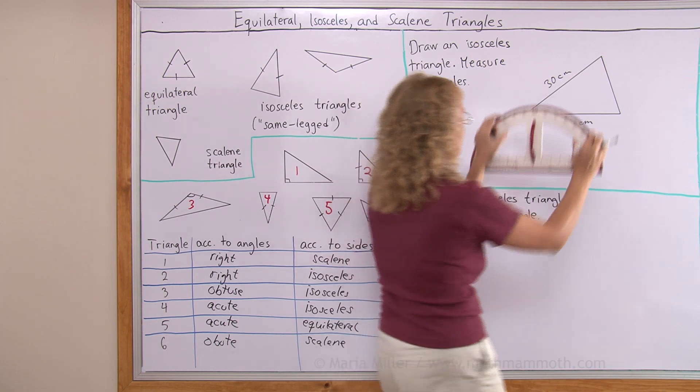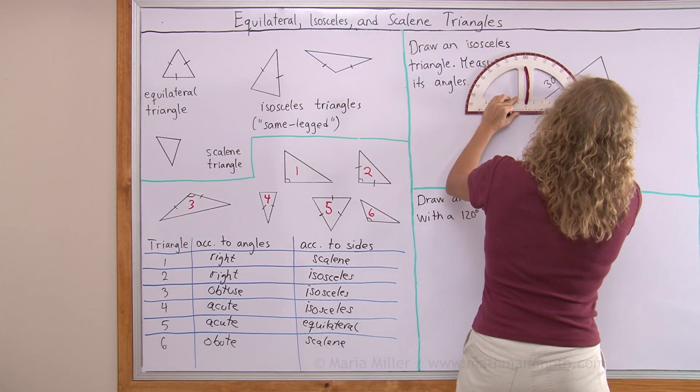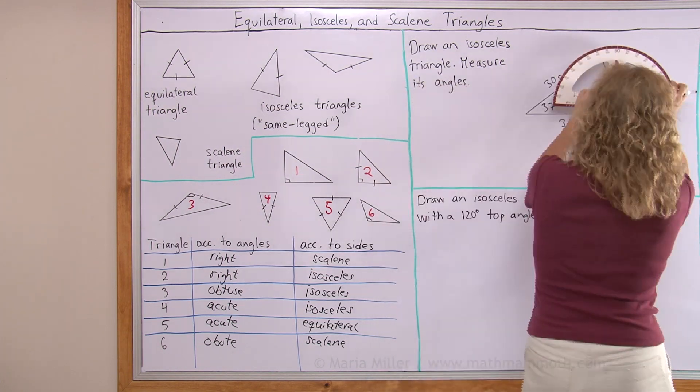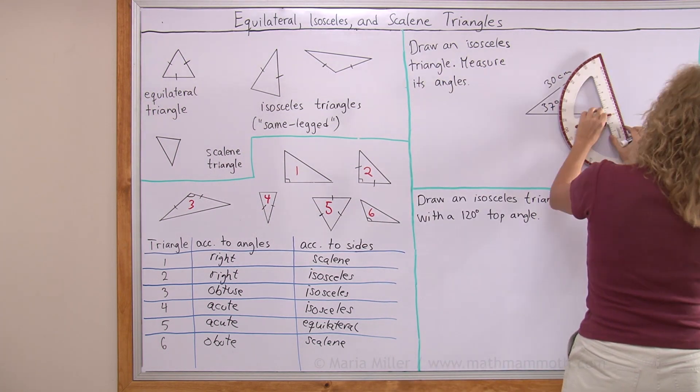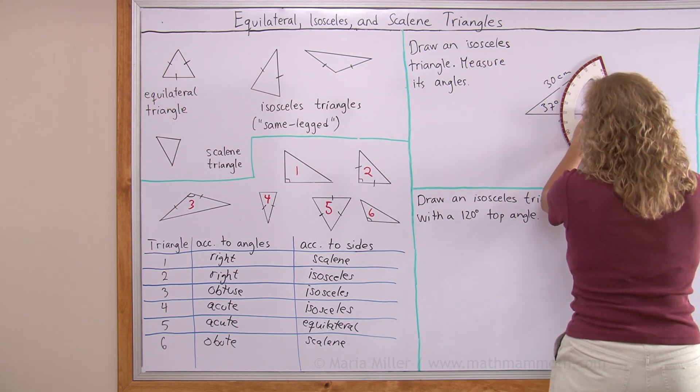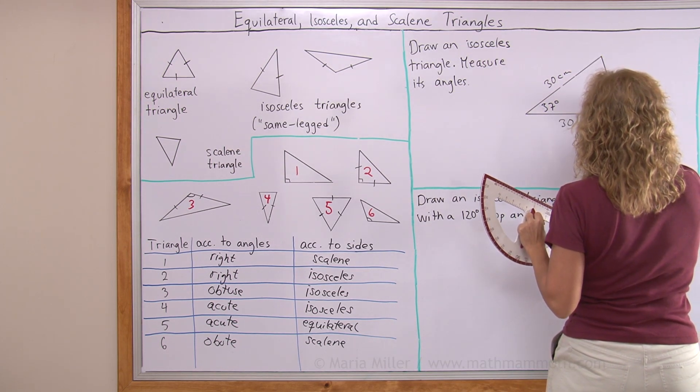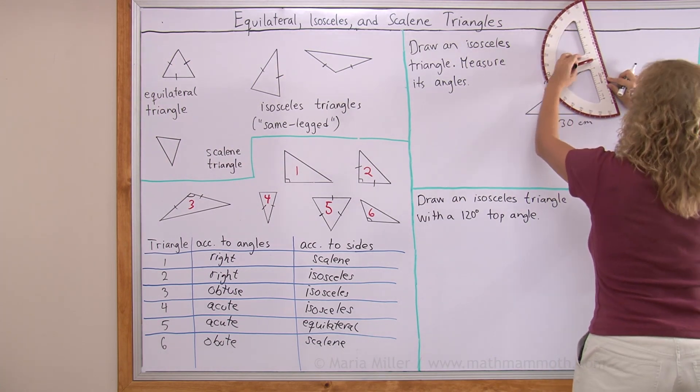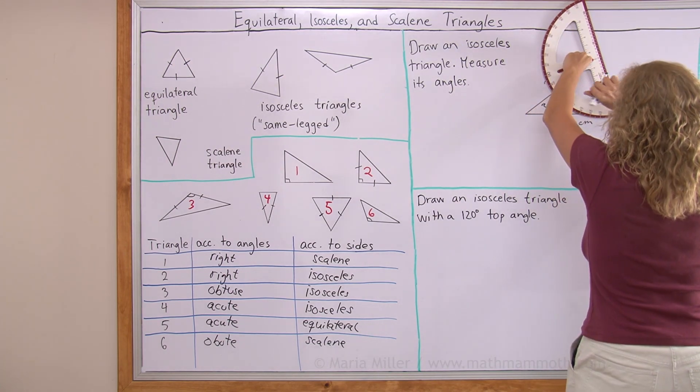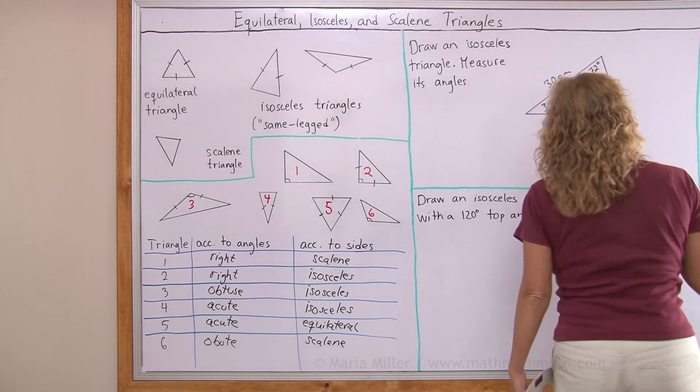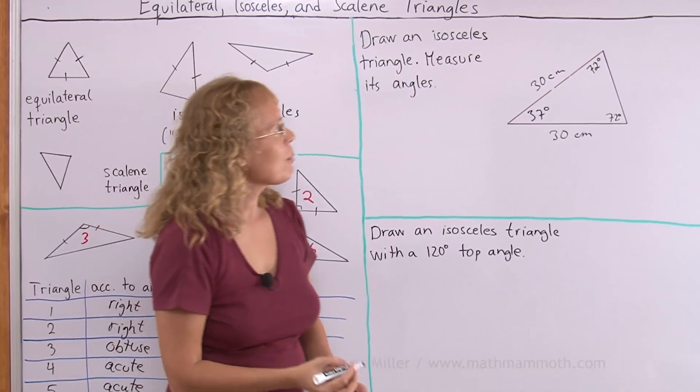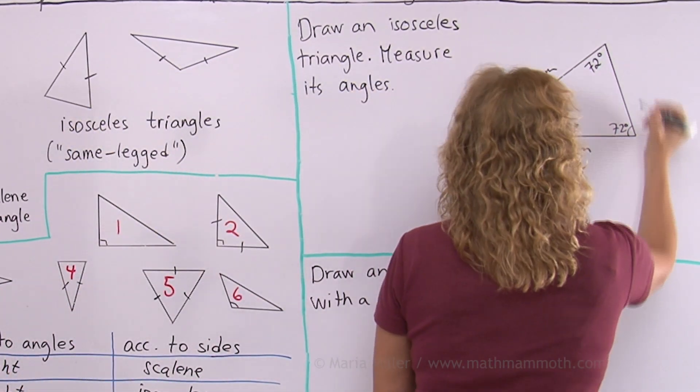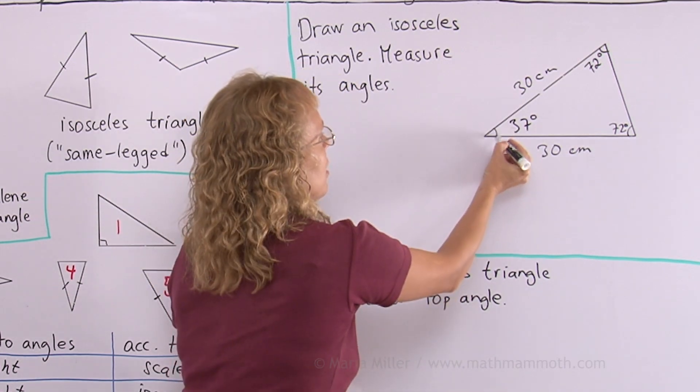Measure its angles now. About 37 degrees here. 72, 72. Now you see the angle measurements that there's two angles that are congruent, all of the same. And this angle is something different.